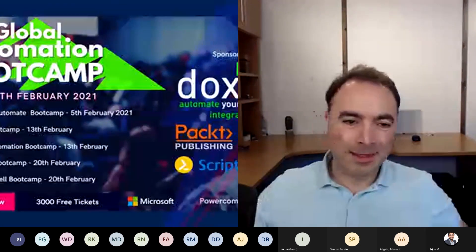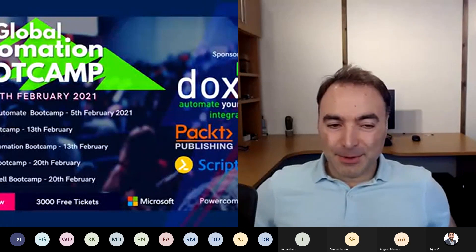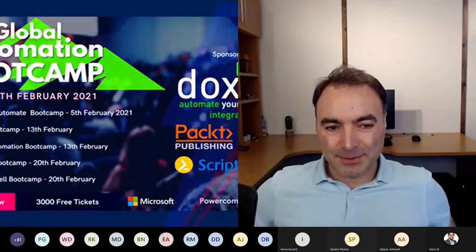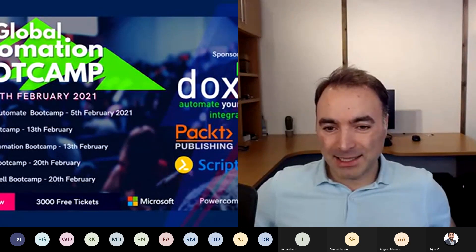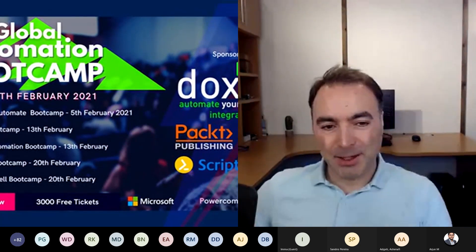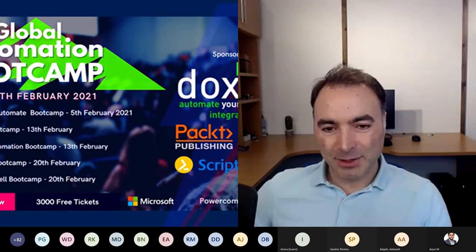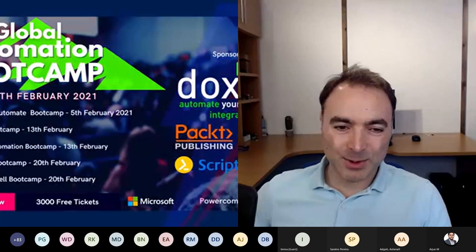Do you have any final words for the community on how to keep in contact with you? You can come to my blog at tackytec.net - there's a contact form there. But probably the easiest way is that I'm always on the Power Automate community forums. I recently became a super user on there, so I'm keen to keep up that status and I pick up questions quite frequently.